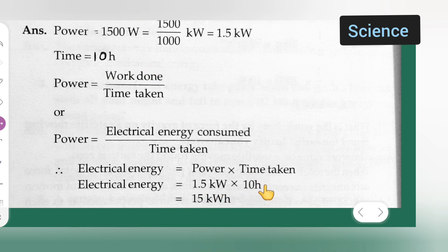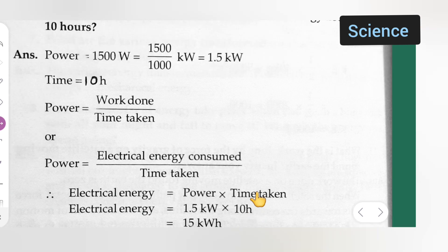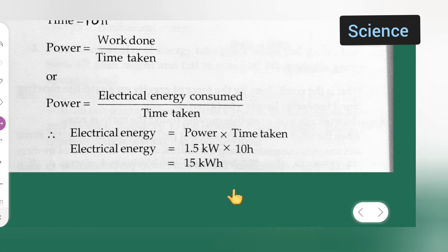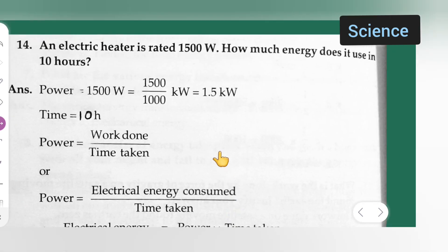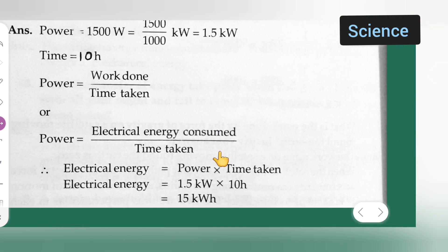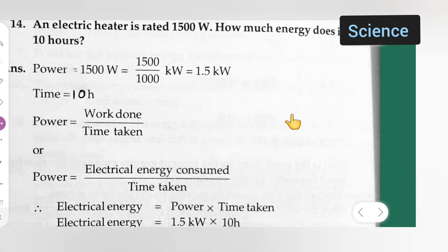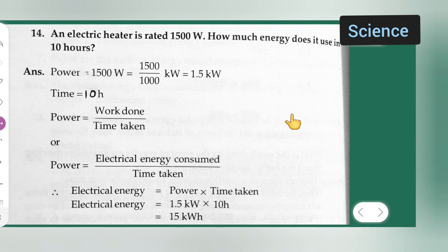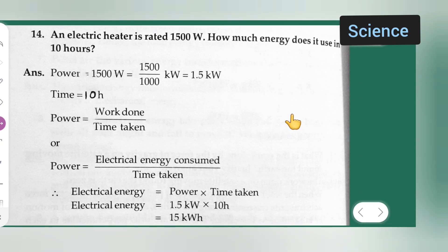Multiplying, we get 15 kWh. So the energy used in 10 hours is 15 kilowatt-hours. You can take down this problem. I hope you can see this clearly — thanks for watching.